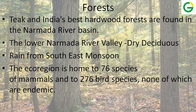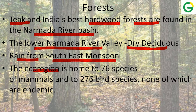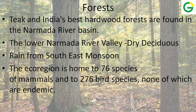The forests of the Narmada Basin: teak and India's best hardwood forests are found in the Narmada river basin. The lower Narmada river valley has dry deciduous rain forests, and these forests receive water from the southeast monsoons. The eco-region is home to 76 species of mammals and 76 bird species. Interestingly, none of them is endemic — meaning none is from a specific location of Madhya Pradesh; all are exotic varieties.